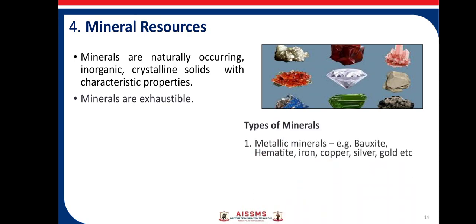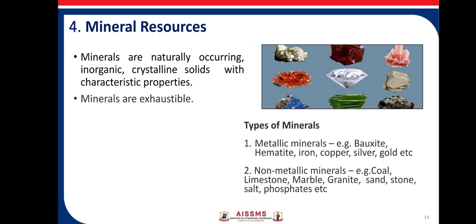Types of mineral resources: First, metallic mineral resources — for example, bauxite, hematite, iron, copper, silver, gold, etc. We derive different metals from these minerals. Second, non-metallic minerals — for example, coal, limestone, marble, granite, sand, stone, salt, phosphate. These are non-metallic minerals used for various industrial purposes.